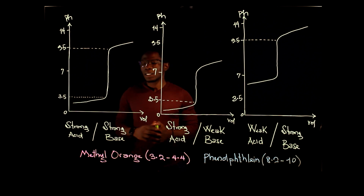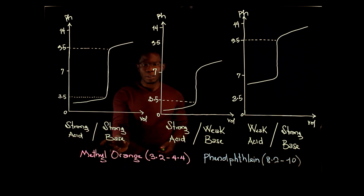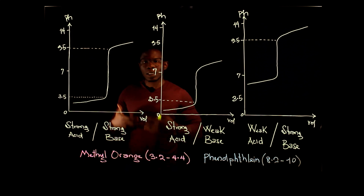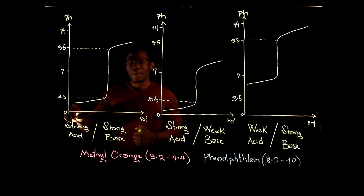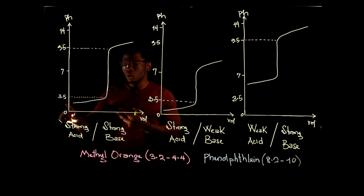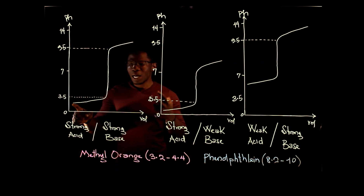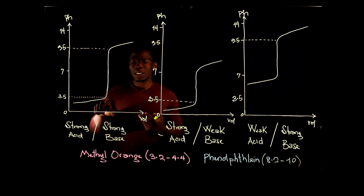In this first example, we have a strong acid reacting with a strong base — for instance, hydrochloric acid reacting with sodium hydroxide. For strong acids, the pH value is very low, close to zero or one, as shown here. As you add more and more base and the volume increases, the solution shifts from acidic toward the neutral point until it reaches this point, indicated at about 3.5 here.